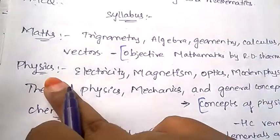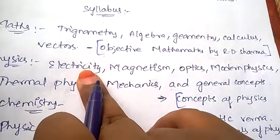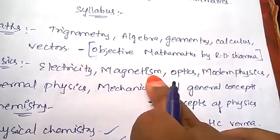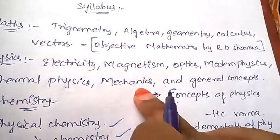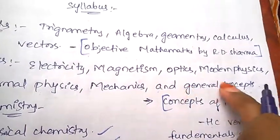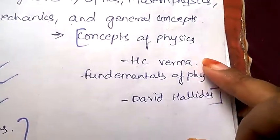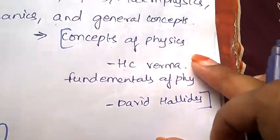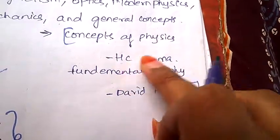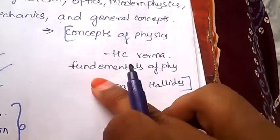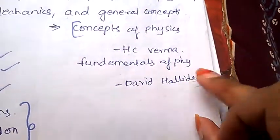Now coming to physics, the topics are electricity, magnetism, optics, modern physics, thermal physics, mechanics, and general concepts. The standard books for JEE Advanced physics are Concepts of Physics by HC Verma and Fundamentals of Physics by David Halliday.